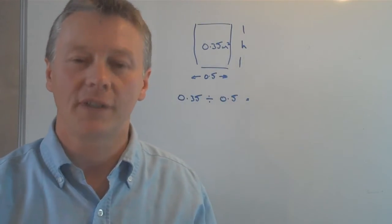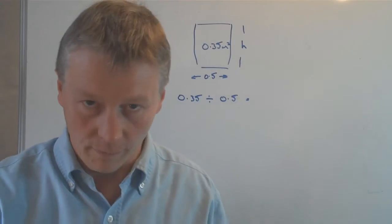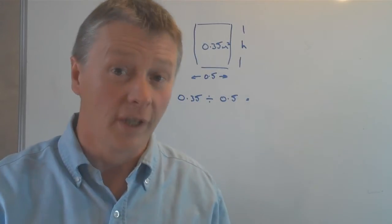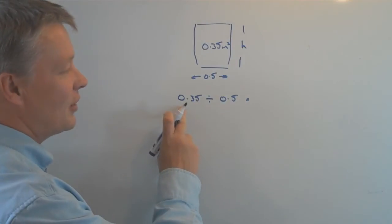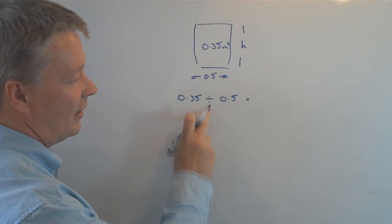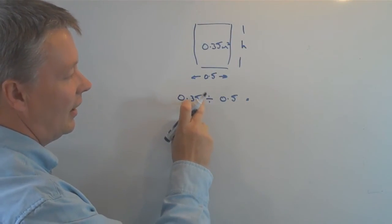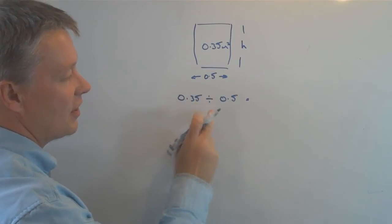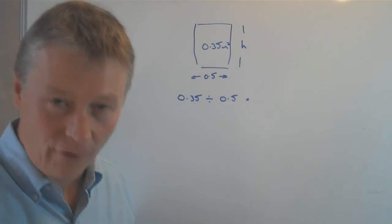However, the good news is that we can rewrite this division as a fraction. So what we've got really is 0.35 divided by 0.5.